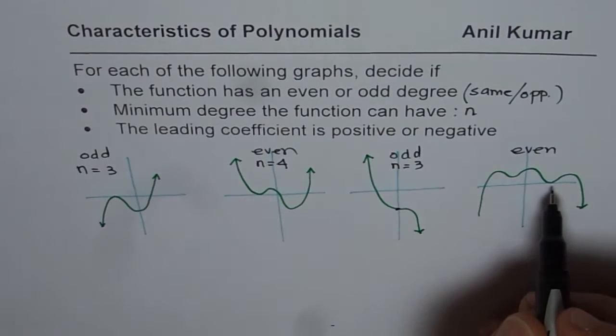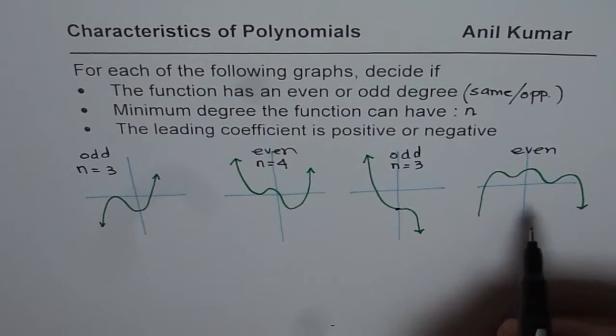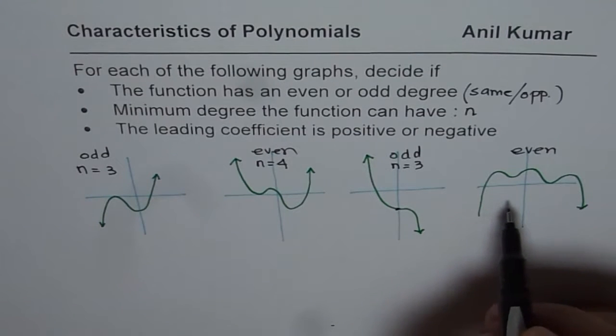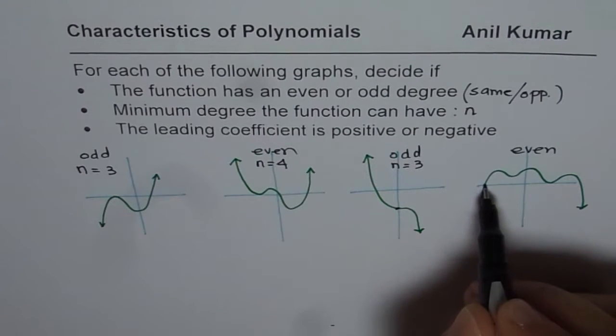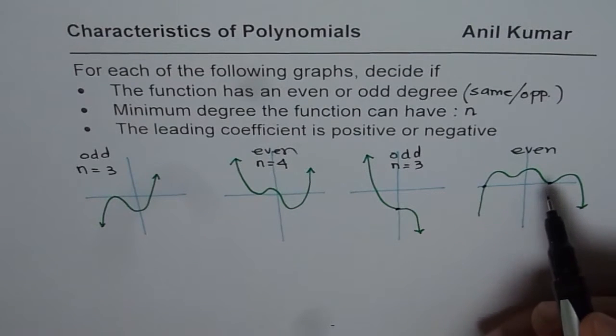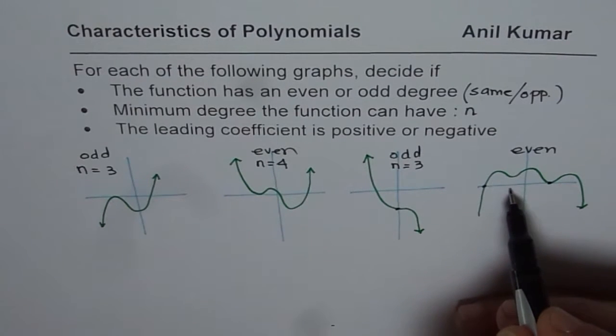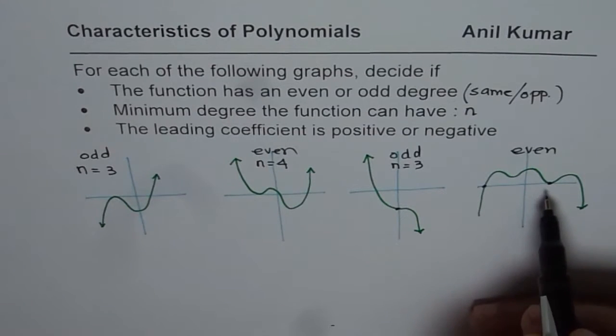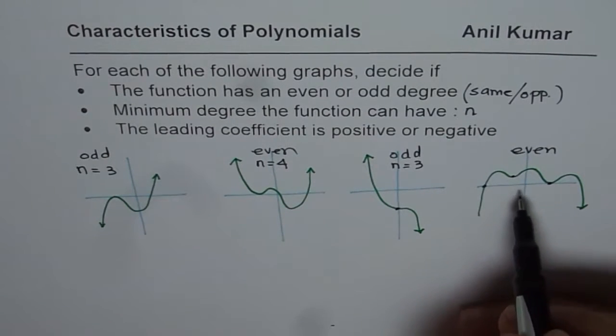Now, in this particular case, what you really notice is, this function has 1 zero here, 2 zeros here. But, imagine, as if this point could have been here. So, it turns there. So, you have to incorporate that as kind of a zero. It could have been translated down, and then you will get a double zero there.